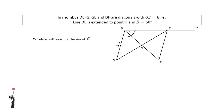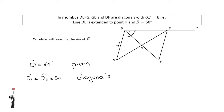Let's have a look at problem 3. In rhombus DEFG, GE and DF are diagonals, and GE is equal to 8 m — I can clearly see that is not inserted on the sketch. Line DE is extended to point H, and the entire angle D is equal to 60 degrees. Calculate with reasons the size of angle D1. Since angle D equals 60 degrees — given — and the diagonals of a rhombus bisect the angles, angle D1 will equal angle D2, meaning both equal 30 degrees. Reason: diagonals of a rhombus bisect the angles.